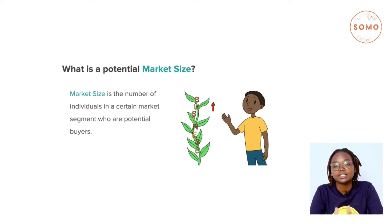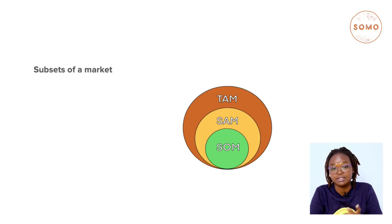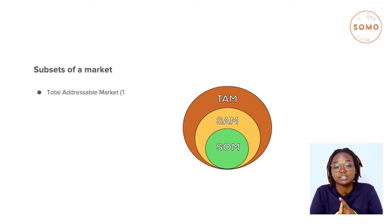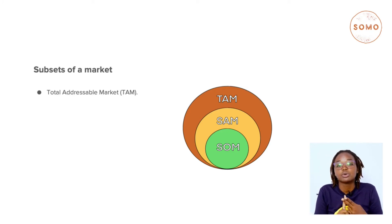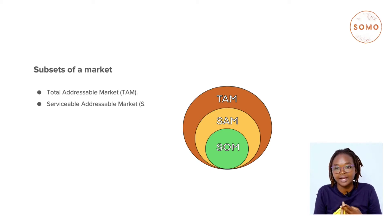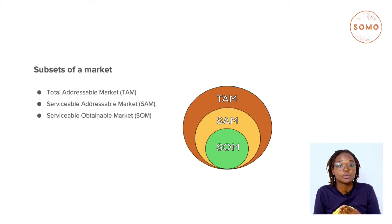We shall be discussing market size in three specific subsets. Number one, total addressable market, which is TAM. Number two, serviceable addressable market, which is SAM. And number three, serviceable obtainable market, which stands for SOM.